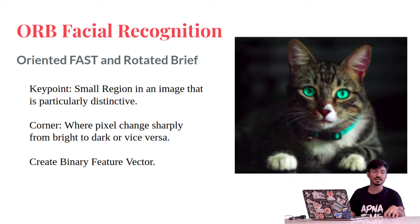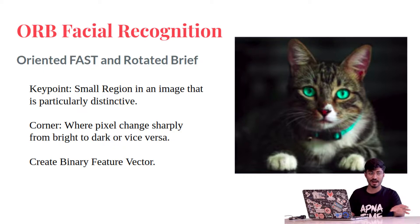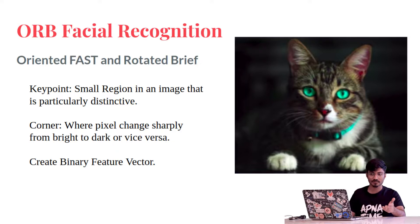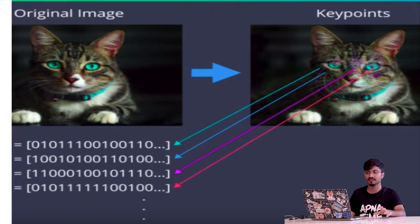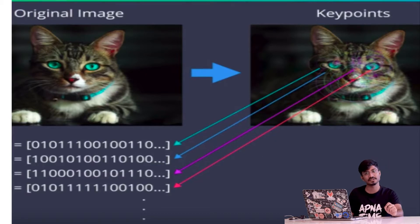So how does it work? It works on key point matching. Key points are distinctive regions in an image, like intensity variations. We identify them and use them for facial recognition. For example, this is a cat image — the first is the original image, and in the second I have detected key points. For every key point, a binary vector of 0s and 1s is created, which reduces computation extensively.